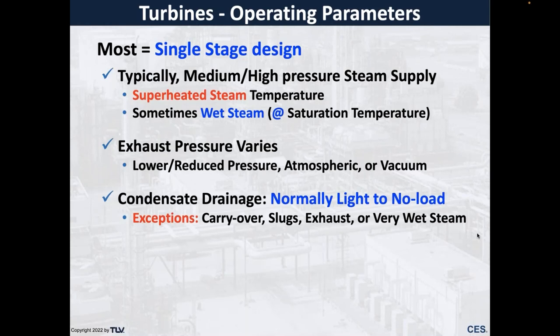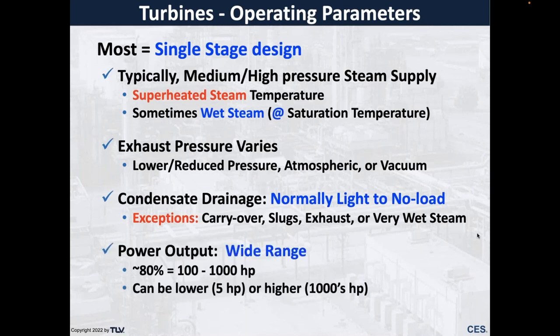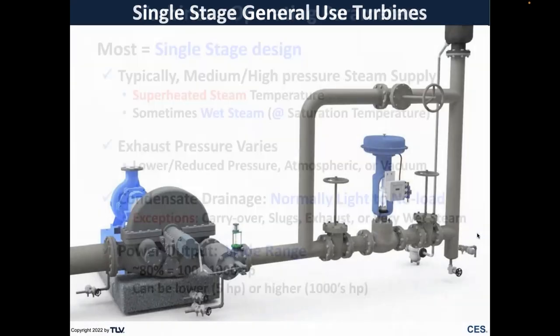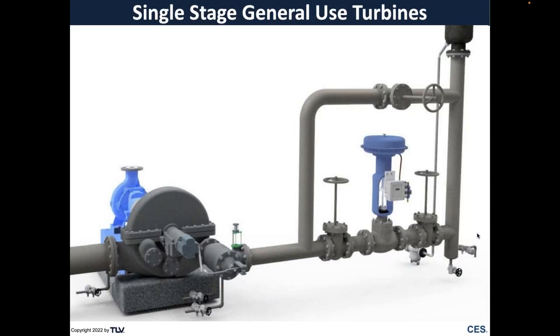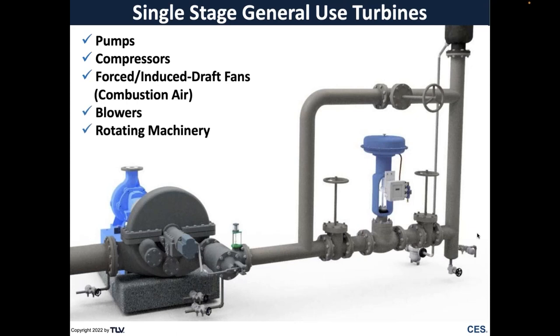Condensate drainage is normally light to no load, but exceptions occur when we have carryover slugs, exhaust load concerns, or very wet steam. It's a wide range of power output, but eighty percent of turbines are relatively small — between a hundred and a thousand horsepower. This is a typical recommended turbine installation used for pumps, compressors, forced air draft, blowers, and rotating machinery.